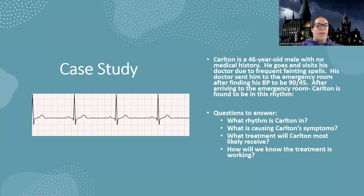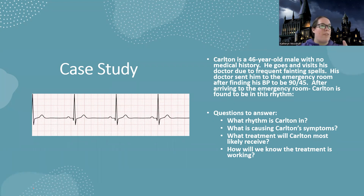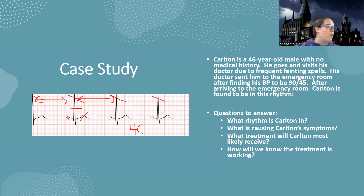Now let's do a case study. Carlton is a 46-year-old male with no medical history who visits his doctor due to frequent fainting spells. His doctor sends him to the emergency room after finding his blood pressure to be 90 over 45 — low blood pressure and fainting spells. After arriving to the ER, Carlton is found to be in a rhythm where everything looks normal. Counting: one, two, three, four — a heart rate of 40, so everything's normal but slow. Carlton is in sinus bradycardia.